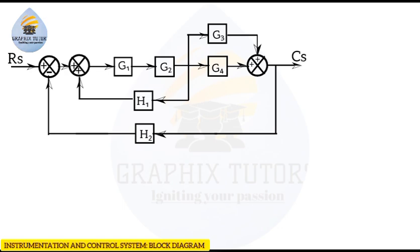There are many ways you can go about this, but let's go through this particular way. We'll have to reduce this block diagram in order to get a single block that will be our overall transfer function. Now if you look at g1 and g2, they are both in series because the same signal is passing through both of them on a straight line. Therefore, g1 will be multiplying g2.